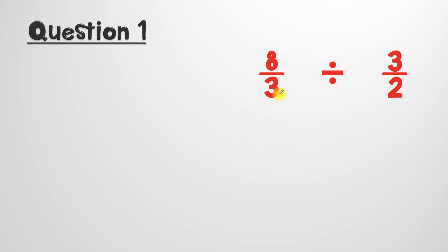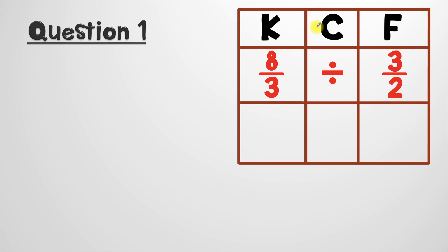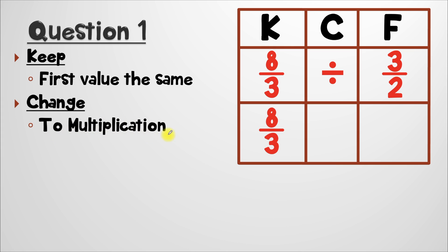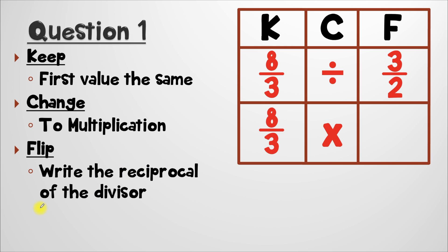Let's rewrite this on a new page. Now that we have two fractions that we're dividing, we have to set up a KCF chart. Each of these letters are really important. The K stands for keep — we're going to keep the first value, eight over three, exactly the same. The C stands for change — we're changing our operation from division to multiplication. And the F stands for flip — we're going to write the reciprocal of the divisor, which is the second value. Reciprocal is just a fancy math word for flipping a fraction. So instead of three over two, the reciprocal is two over three, because the bottom became the top and the top became the bottom.